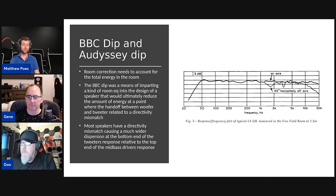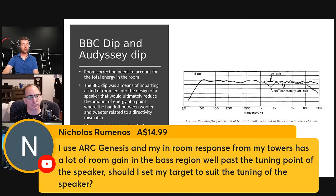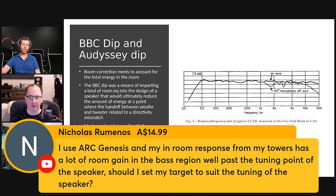That's why for Odyssey setups we usually recommend using the flat curve — or at least you can turn the BBC dip off in the app. Listen both ways because it may be better with it depending on your speakers, especially if you have an 8-inch two-way. Super chat from Nicholas: 'I use ARC Genesis and my in-room response from my towers has a lot of room gain in the bass region well past the tuning points of the speaker. Should I set my targets to suit the tuning of the speaker?' EQ it to what sounds right to you and follow the natural curve of the speaker. Just don't try to extend the target curve out to 20 Hz and boost the bass aggressively — you'll overload the woofer.